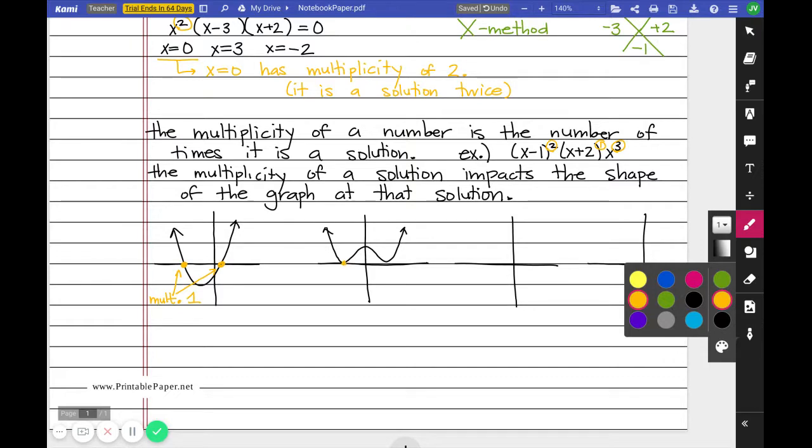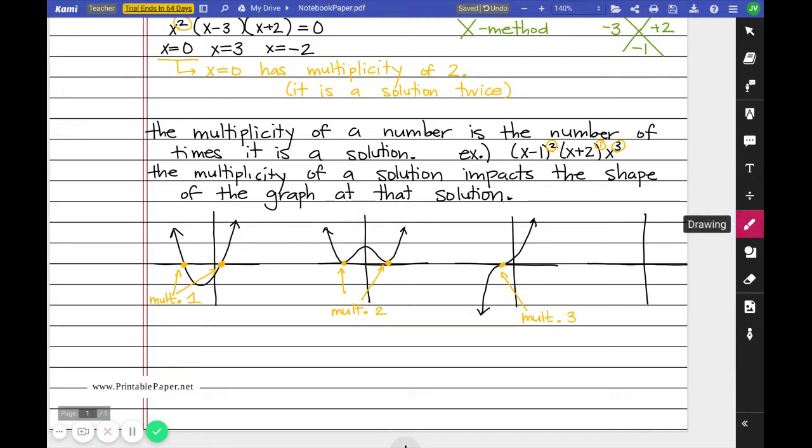If I change my multiplicity to 2, my graph no longer crosses through. It does sort of a bounce. Sorry, guys, I knew that was going to happen. It does a bounce. And that bounce, where we hit the axis and bounce off, that determines a multiplicity of 2. If I increase to a multiplicity of 3, I still pass through. Odd multiplicities cross over to the other side. Even multiplicities do a bounce. If I do a multiplicity 3, it gets sort of this wiggle. The graph still crosses over, but it flattens out on its way. And the bigger the multiplicity, the flatter the graph gets.